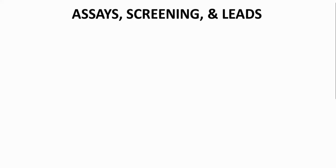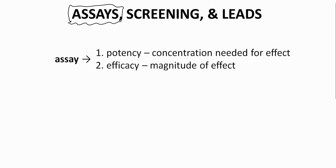After target selection, the biology team will need to create a biochemical test that measures the activity of the target protein. This test is called an assay. The assay determines two things: first, it allows quantification of a molecule's potency, or the drug concentration required to act on the target protein. Second, the assay measures a molecule's efficacy, or the magnitude of the effect the drug has on the target.